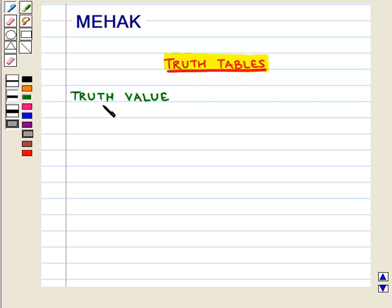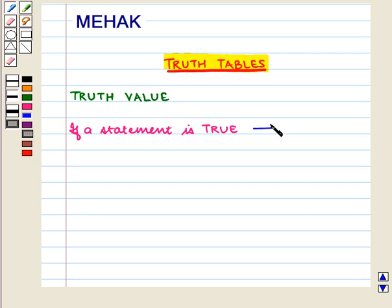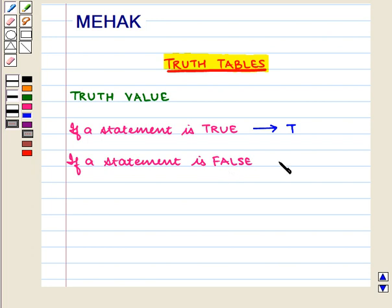We are already familiar with the truth value of a statement. Let us recall: if a statement is true, its truth value is T. And if a statement is false, its truth value is F.